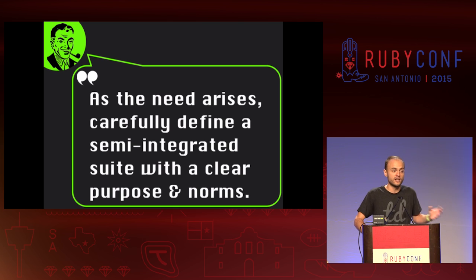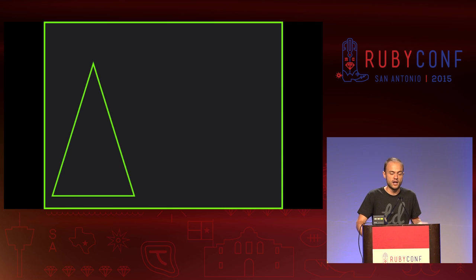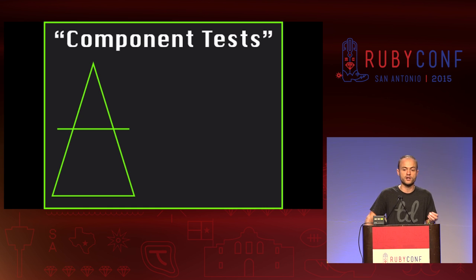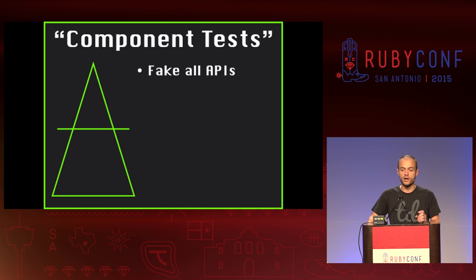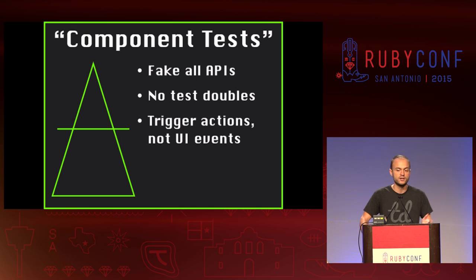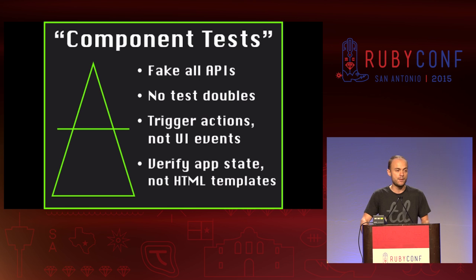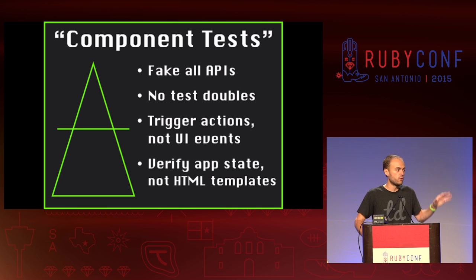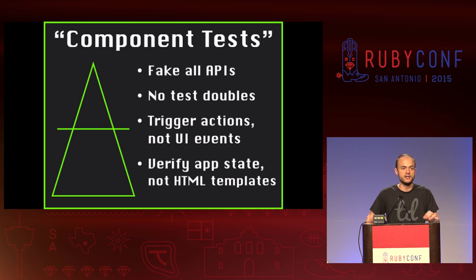As the need arises it might be the case you need to define some kind of semi-integrated test suite — it's just important you establish a clear set of norms and conventions. For instance, on an Ember team recently we agreed we're going to write Ember component tests, and up front we all got on board with faking our APIs, not using testable objects, triggering actions instead of UI events, and verifying app state, not HTML templates. These were arbitrary decisions, but we relished the opportunity to lock in those arbitrary decisions because we knew it would buy us consistency.